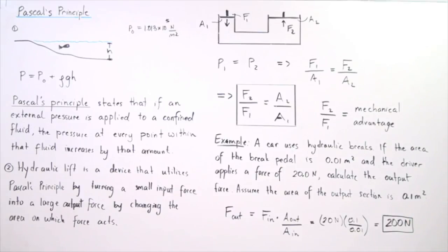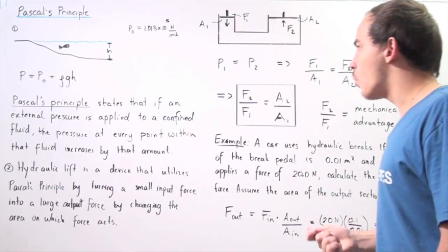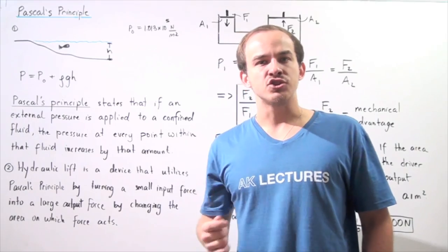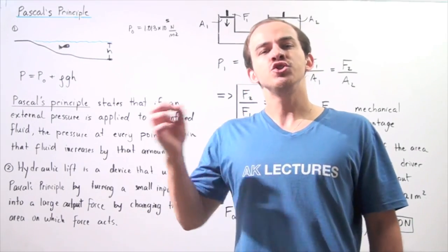We see that because the area of the output piston increased by a proportion of 10, the output force also has to increase by that same proportional amount, going from 20 to 200 newtons.